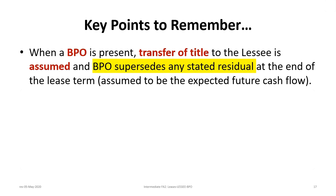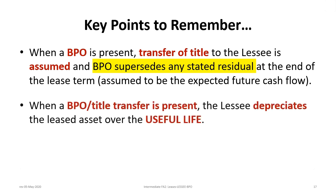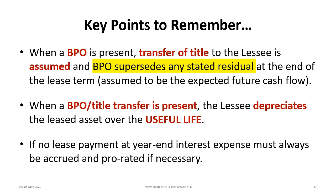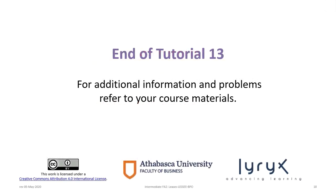When a BPO is present, title transfer is assumed; the BPO supersedes any stated residual and becomes the expected future cash flow. When a BPO or title transfer is present, the lessee depreciates the leased asset over its useful life — not the lease term. Finally, if there is no lease payment at year-end, interest expense must always be accrued and prorated if necessary. In our situation, the lease payment was due January 1st, so we accrued interest on a prorated basis at December 31st. This concludes tutorial 13a.